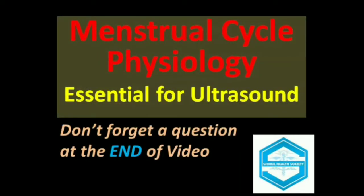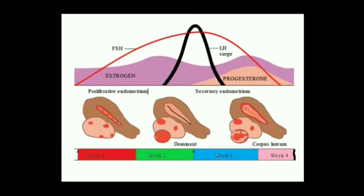In this short video I will discuss the physiology of the menstrual cycle, which is very much essential for ultrasound. At the end of this video there will be a question — don't forget it. An average menstrual cycle lasts 28 days: day 1 through day 28, or week 1 through week 4. It may vary between 25 and 35 days; here we consider a cycle of 28 days.